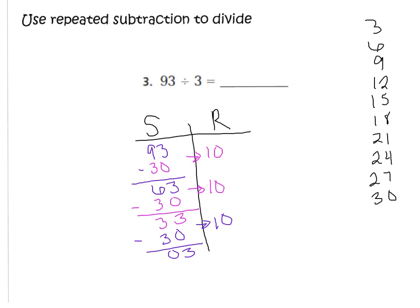Did I get closer to 0? Yes, but I still have 3. Can I subtract a multiple of 3? I can — I can subtract 3. Before I do that, I need to write how many groups of 3 that is: 3 times 1 is 3, so it's only one group. When I subtract 3 minus 3, I get 0. I cannot subtract any more multiples of 3. Now I add my recorded groups: 10 plus 10 plus 10 is 30, plus 1 is 31. So 93 divided by 3 is 31.